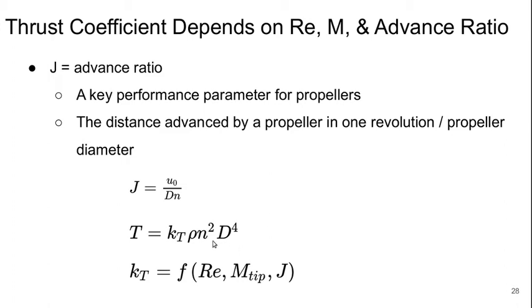The thrust is a thrust coefficient times the density times the velocity squared times the diameter to the fourth power. So we can see the definition of thrust coefficient is T over rho N squared D to the 4. We can expect that this thrust coefficient will be purely a function of Reynolds number, the Mach number, say the tip Mach number for the blades, and the advanced ratio of the propeller.